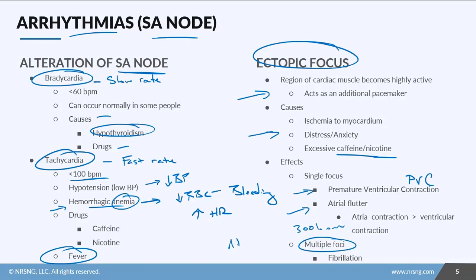There are also arrhythmias caused by multiple foci, and fibrillation is a big one. If there is atrial fibrillation, the atria are quivering and not acting like an efficient pump. You can also have ventricular fibrillation, which is not compatible with life. This can be caused by a clot that blocks perfusion to the heart muscle itself — the tissue starts to die and the ventricles basically quiver. Remember that the ventricles are the powerhouse, and if they're not doing their job, the body isn't getting blood pumped.